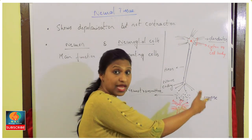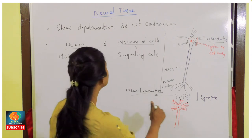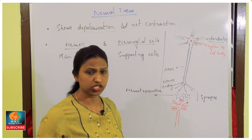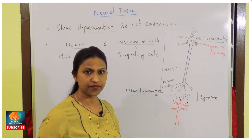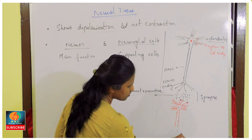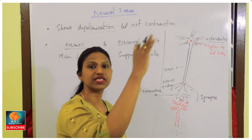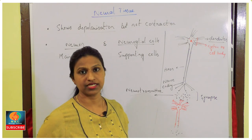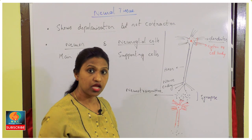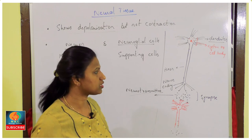At the synapse, the signal can be excitatory or inhibitory. Unlike muscle cells, neurons do not contract — they only show depolarization (excitation). Neurons that carry signals toward the target are called motor neurons, while those that collect information are called sensory neurons.